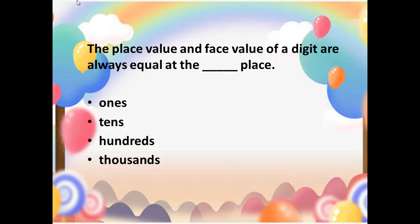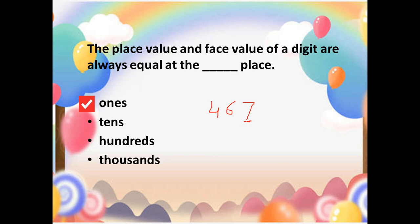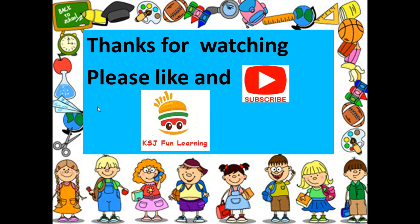The next question is: place value and face value of a digit are always equal at which place? The place value and face value of a digit are equal only at the ones place. For example, in the number 467, the place value of 7 is 7 and its face value is also 7. So the correct answer is the ones place.